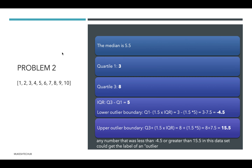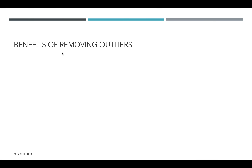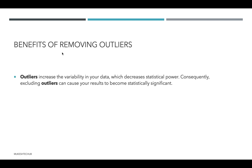Benefits of removing outliers: outliers increase the variability in your data and decrease its statistical power. Excluding outliers can cause your results to become statistically significant. This is the way we can deal with outliers and increase the statistical power of our data before providing it to an ML algorithm, so the algorithm can converge toward generalization. Thank you for watching.